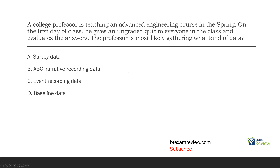Option A: survey data. Well, a quiz isn't a survey — he's not getting their opinions. He's actually giving them quizzes and evaluating the answers. Option B: ABC narrative recording data. Is the professor recording any antecedents or consequences? He's not. He's taking the quiz and evaluating those answers to determine where his students are starting. Option C: event recording data. Event recording is essentially frequency data — just how many times something occurred. He's not looking at how many times something occurred.